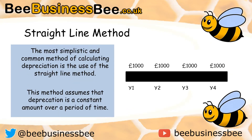One of the methods that we can use is something called the straight line method. This is the most simplistic and common method of calculating depreciation, because it assumes that depreciation is a constant amount over a period of time.